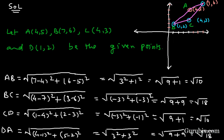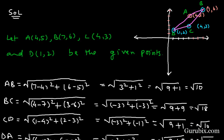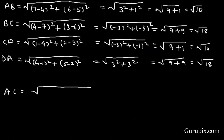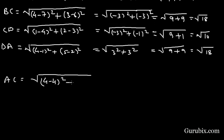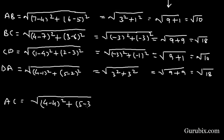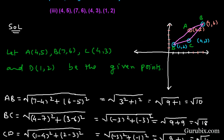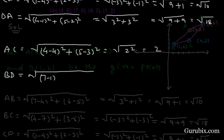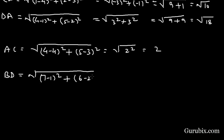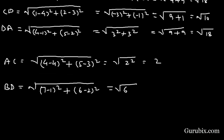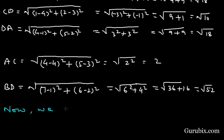Now we shall find the diagonal AC = √[(4−4)² + (5−3)²] = √[0 + 4] = 2. And diagonal BD = √[(7−1)² + (6−2)²] = √[6² + 4²] = √[36 + 16] = √52.